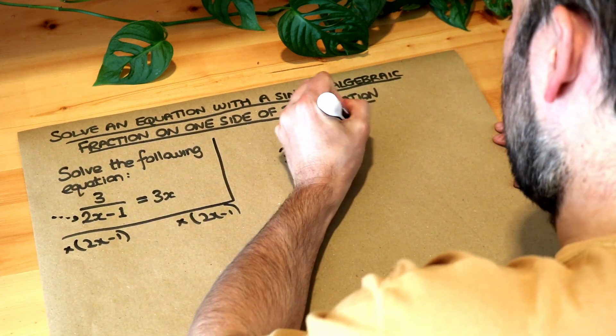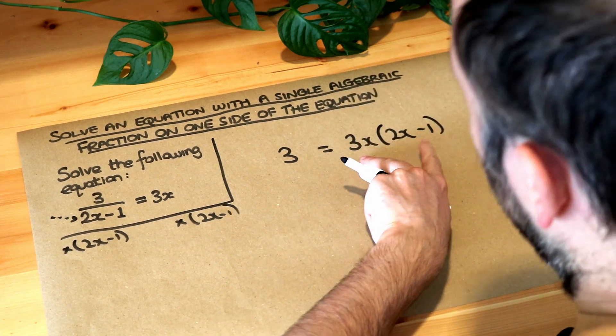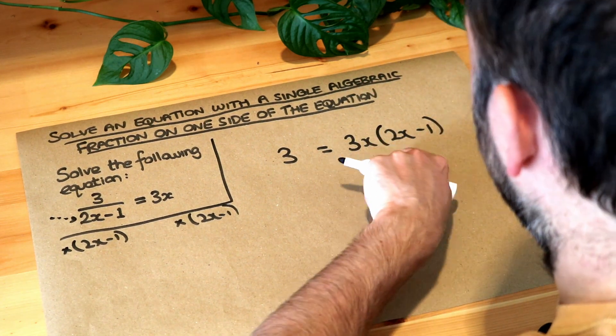we could write 3x multiply by 2x minus 1. Notice when you put these two things next to each other, it just means you're multiplying them together.